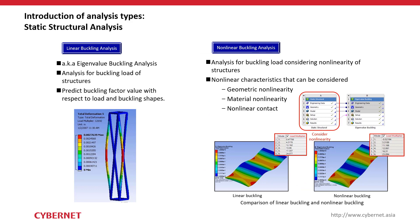Buckling analysis — or eigenvalue buckling analysis — identifies the buckling load and shape of your structure. You can predict the load factor value at which buckling occurs relative to the initial applied load, and evaluate the shape of the buckling. Nonlinear buckling analysis is similar but can include the nonlinearities mentioned previously.